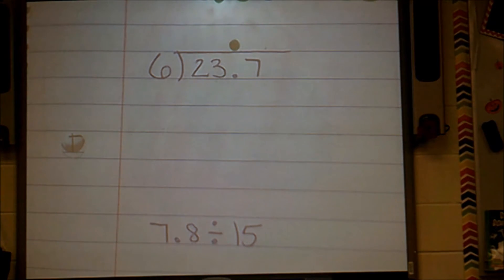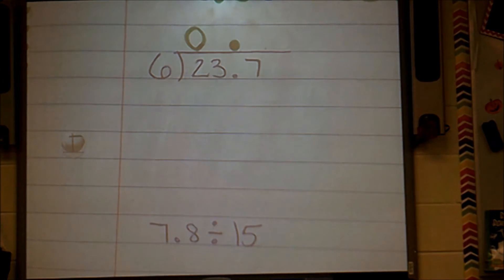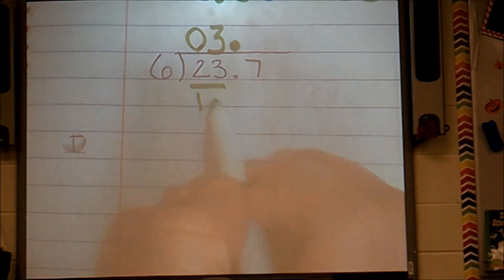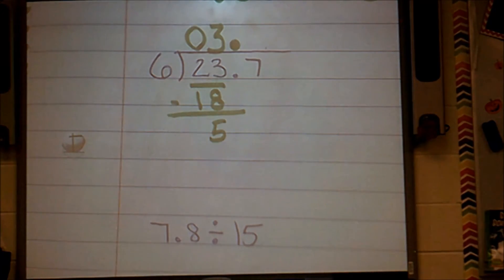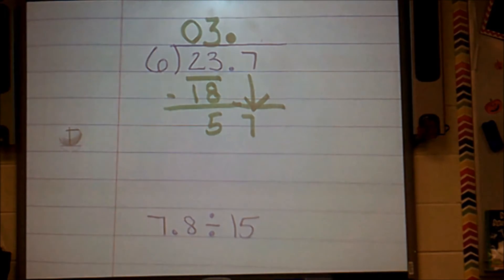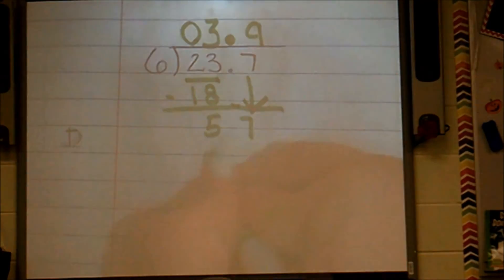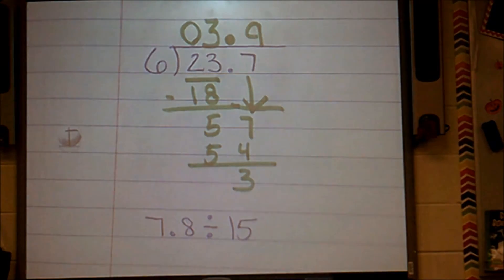So now I can solve this using standard algorithm. Thinking in my brain, six into two is zero. Six into twenty-three, well that's a different story, sounds like a three. Six times three, which is eighteen, and subtract, and get five. And then I'm going to bring down my seven. Six into fifty-seven, it can go in nine times. Six times nine is fifty-four, and then I subtract and get three.